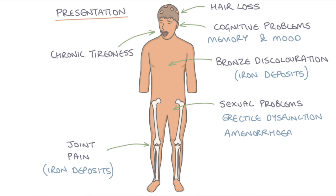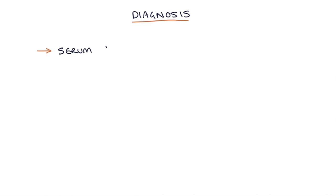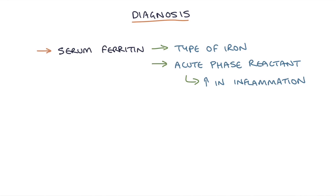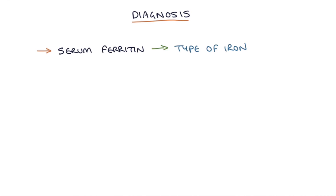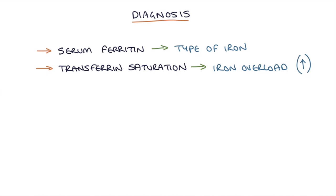The main diagnostic method is to perform a serum ferritin level — ferritin is a type of iron in the blood. Ferritin is also an acute phase reactant, meaning it rises with inflammatory conditions, which makes it slightly unreliable. We can perform a transferrin saturation to help distinguish: a high ferritin caused by iron overload will show a high transferrin saturation, whereas ferritin elevated by inflammation or non-alcoholic fatty liver disease will show a low or normal transferrin saturation.